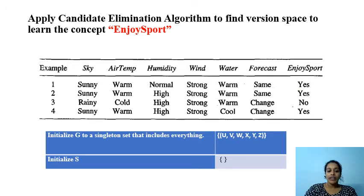Now initially we are starting from G and S. G has U, V, W, X, Y, Z and S is the null set.